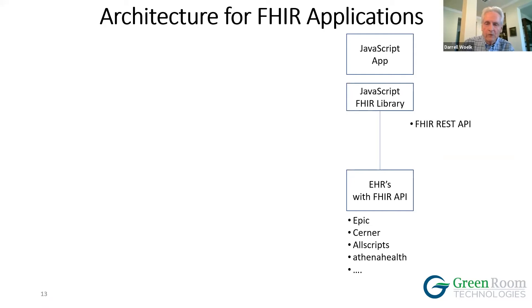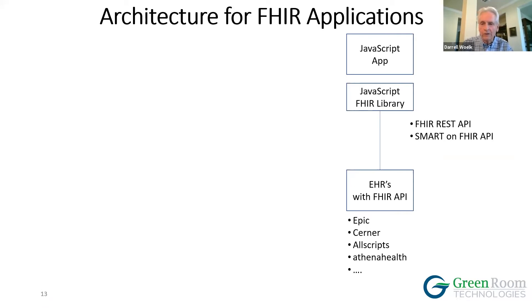There are three or four different types of APIs: the FHIR REST API, which allows you to get individual resources or do queries for resources; CDS Hooks; and then bulk data access.